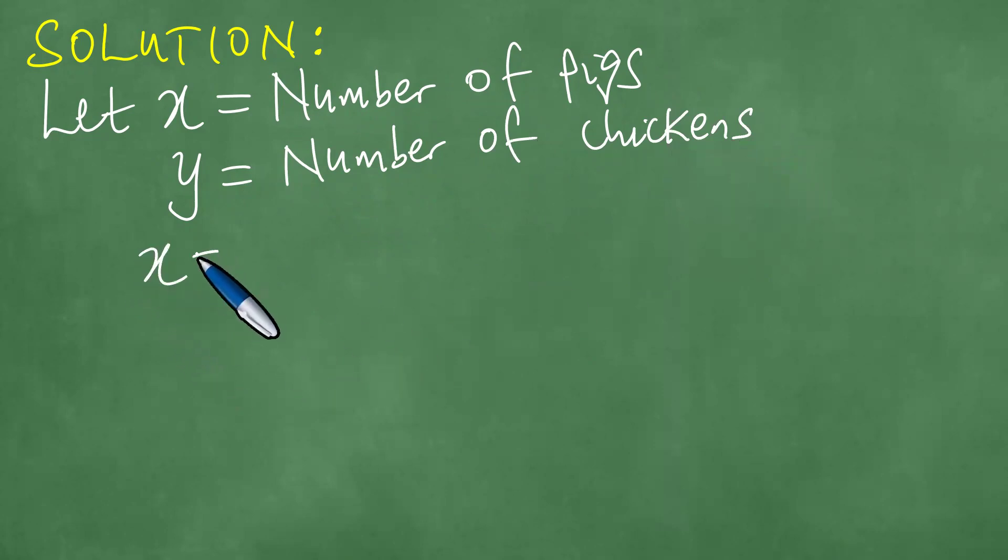And then now there are 40, meaning that the sum of the number of the pigs and the chickens is actually 40. And the implication out of this is therefore that Y equals minus X plus 40. Let us call this here the first algebraic equation.